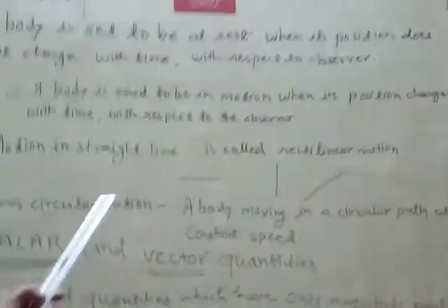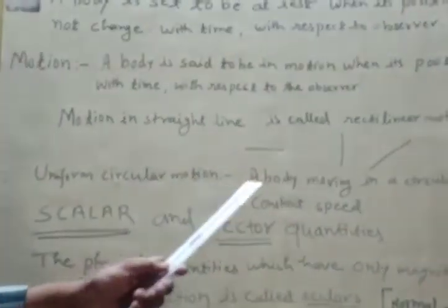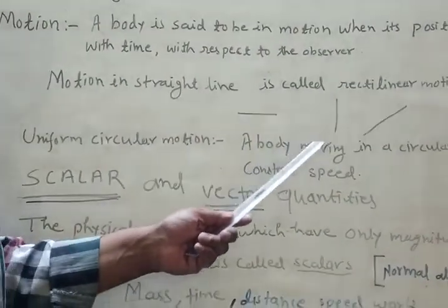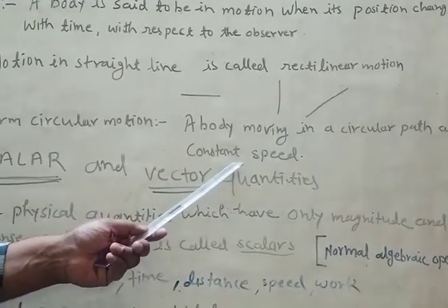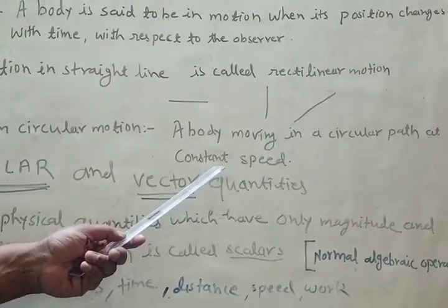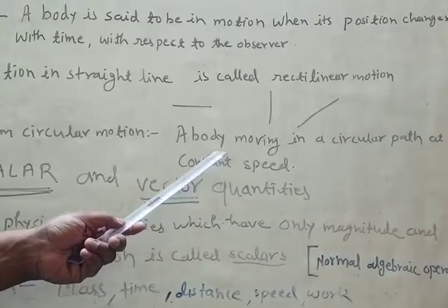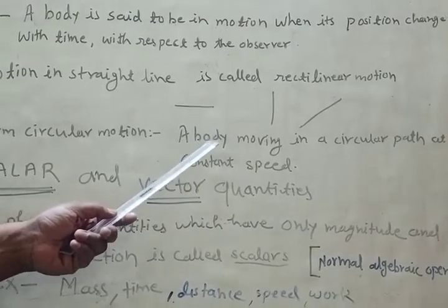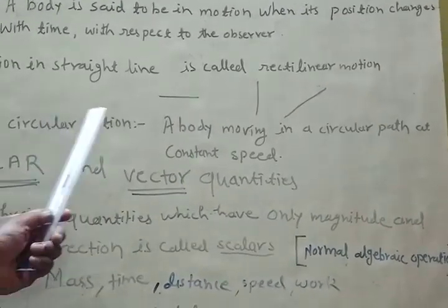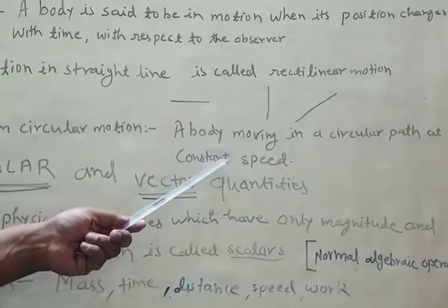The uniform circular motion is when a body is moving in a circular path at constant speed.